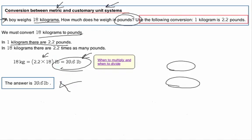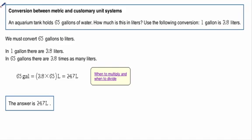Here's another example. We're again converting. This time, it's 65 gallons to liters. Notice it says that one gallon is 3.8 liters. Important to pay attention.